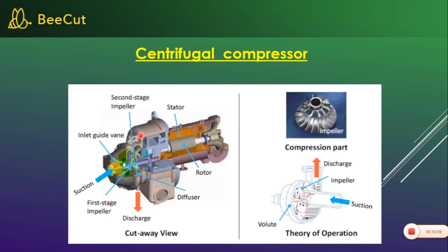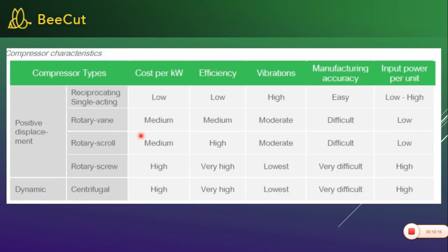Next video will cover, one by one, the function and benefits of each compressor type. In this comparison graph, you can understand: reciprocating — cost is low, efficiency is low, vibration is high, manufacturing is easy, input performance is low. Rotary — medium cost, medium efficiency, moderate difficulty. Centrifugal — cost is high, efficiency is very high, vibration is low, manufacturing is very difficult, but high input power per unit with high power consumption.